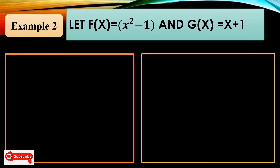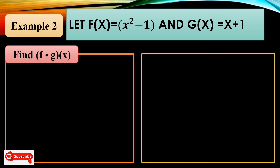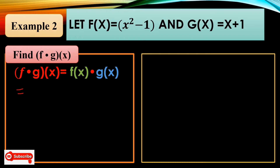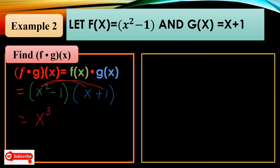Example number 2. Let f(x) = x² − 1 and g(x) = x + 1. Find the product f·g(x) = f(x) times g(x) = (x² − 1)(x + 1). Applying the FOIL method: x² times x is x³, x² times 1 is +x², negative 1 times x is −x, and negative 1 times 1 is −1. The final answer for the product is x³ + x² − x − 1.